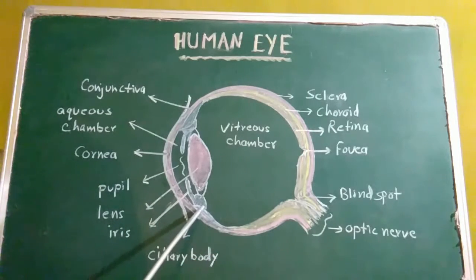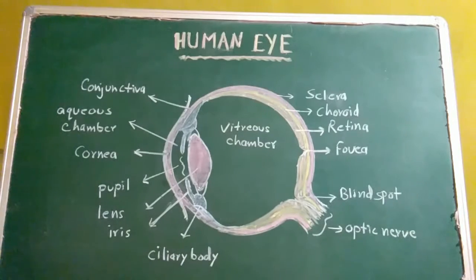Behind the iris, the vascular coat is thickened to form the ciliary body. Rods are sensitive to dim light and cones are sensitive to bright light and give color vision to the eye.